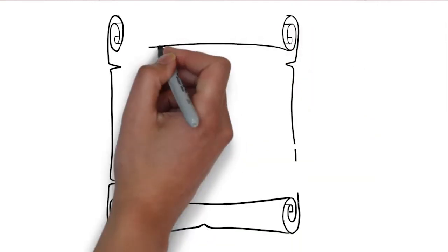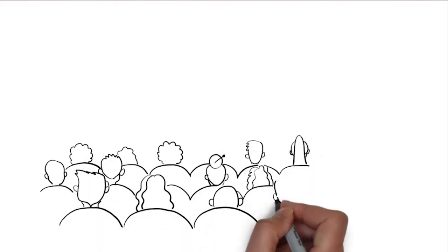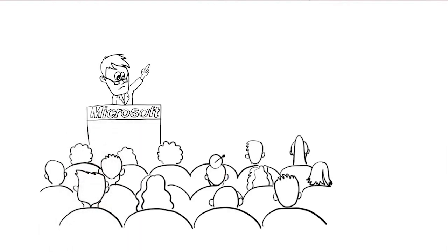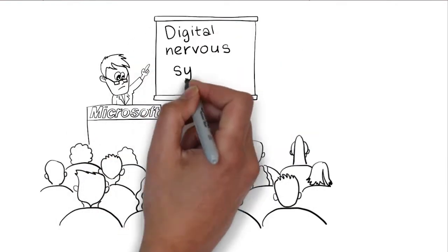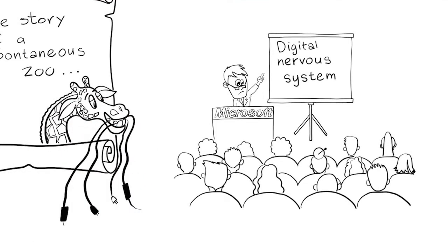Now, the story of a spontaneous zoo. Back in 1999, during the annual summit of Microsoft, the CEO of that company, a dude called Bill, set the direction for the inner workings of his company. He called it a digital nervous system.